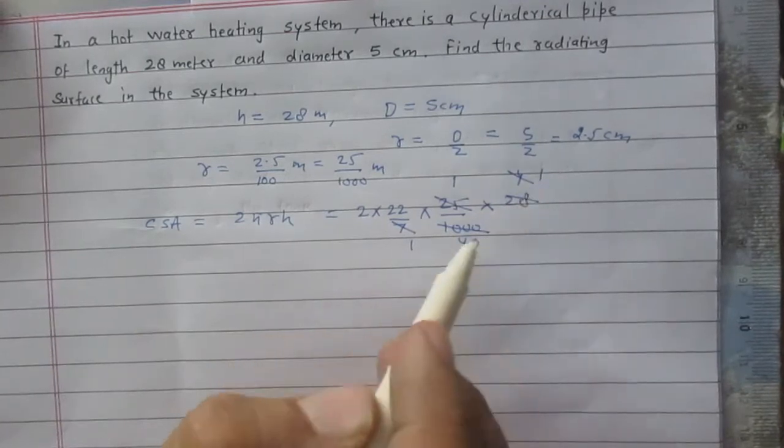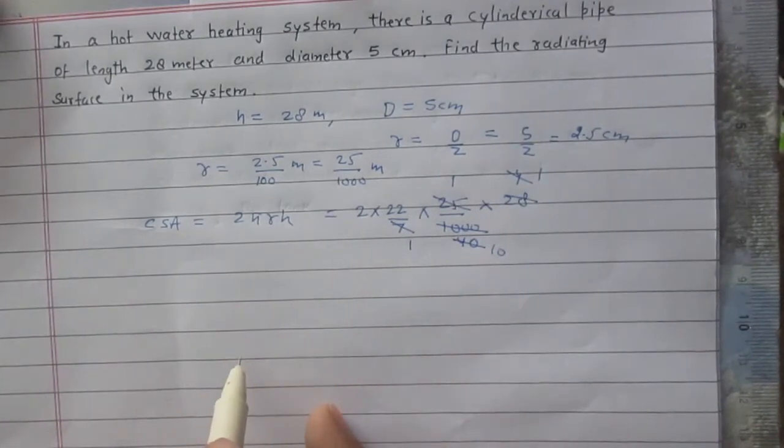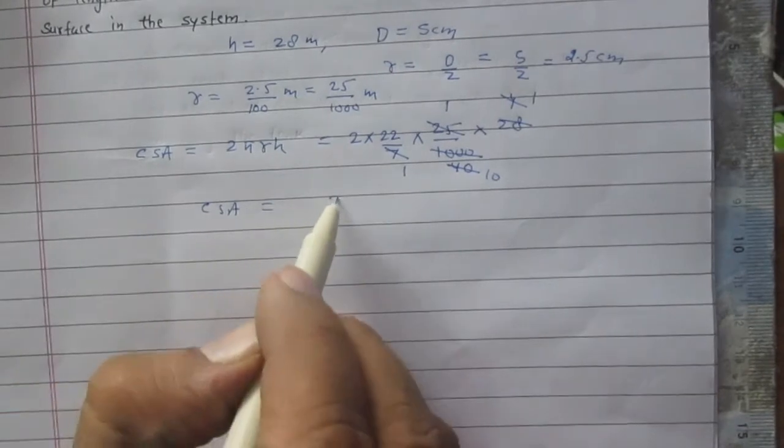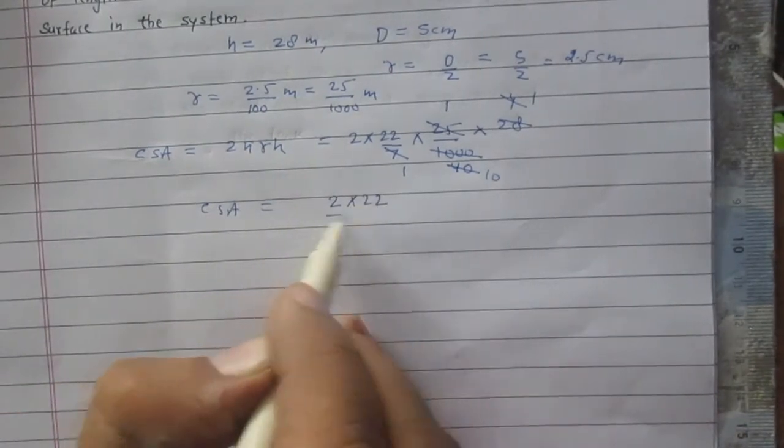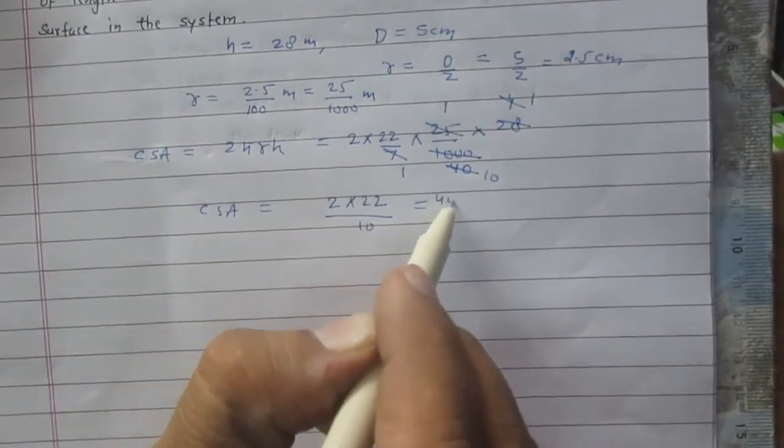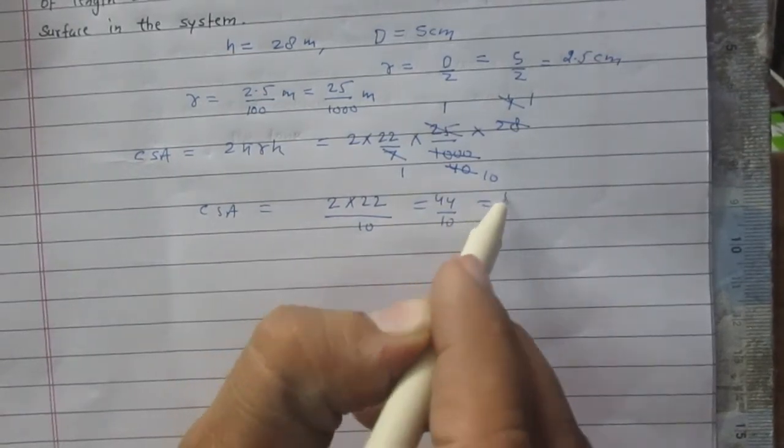Further, you can write it as 1 upon 10. Finally, you will get curved surface area is twice of 22 upon 10, which is 44 upon 10, which is 4.4.